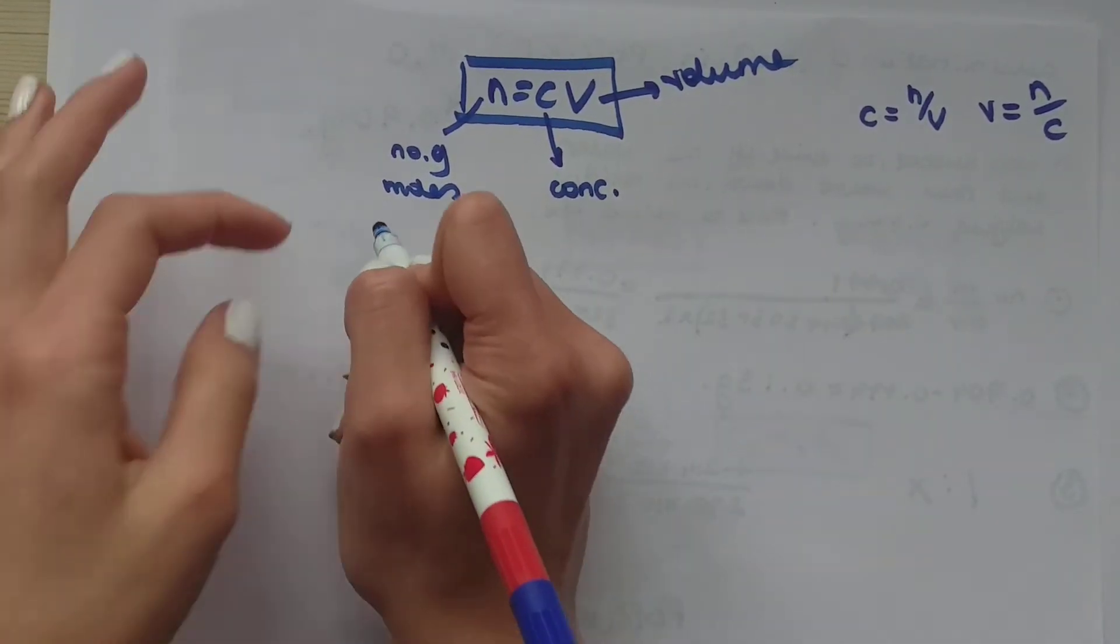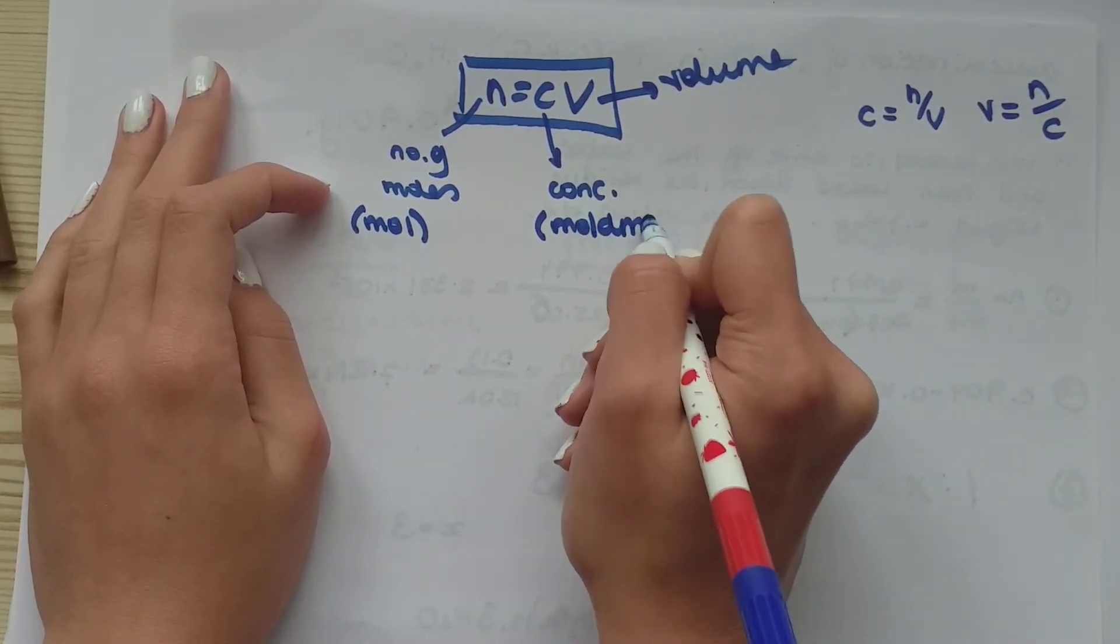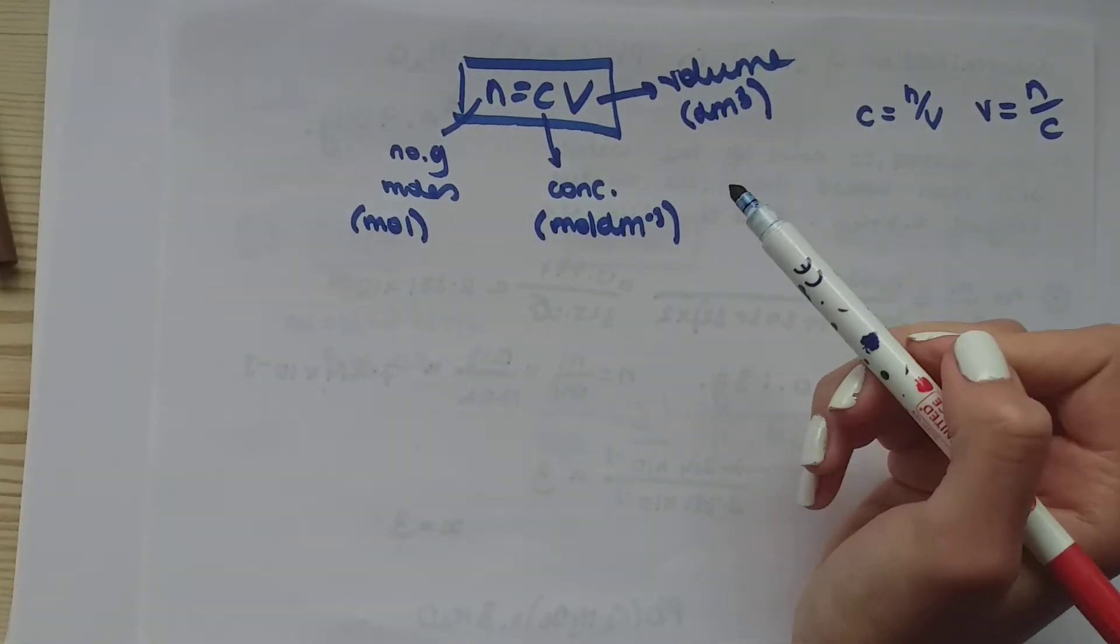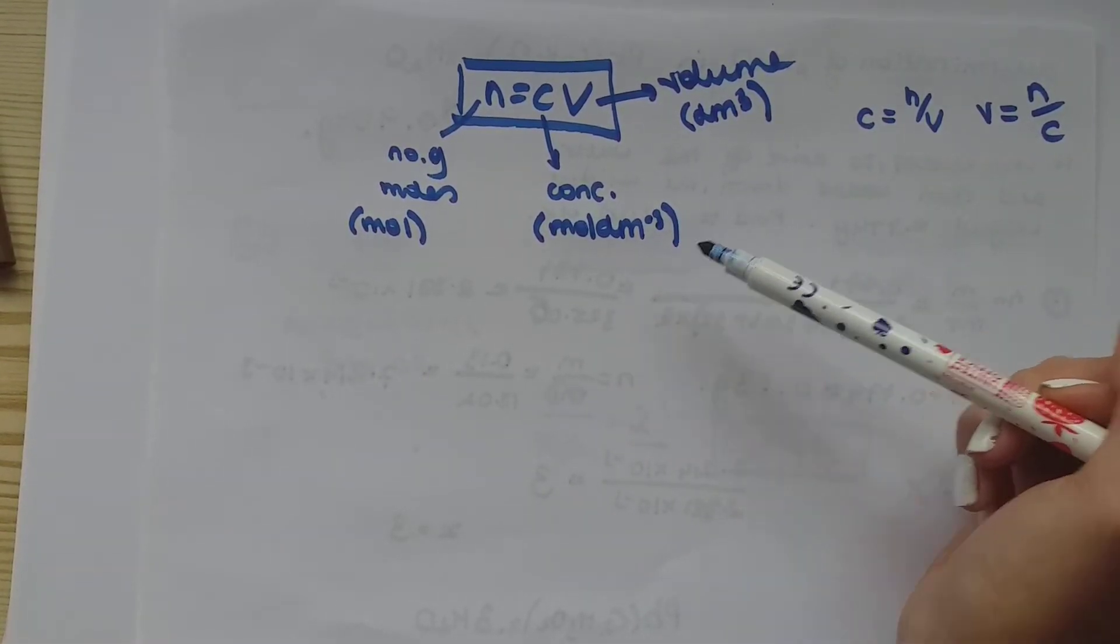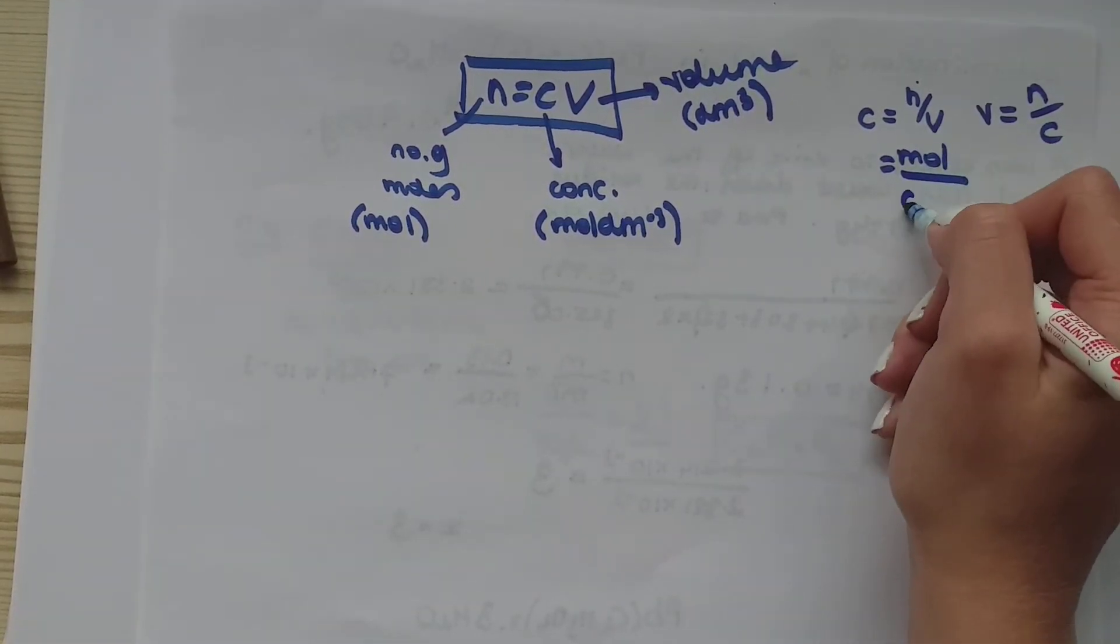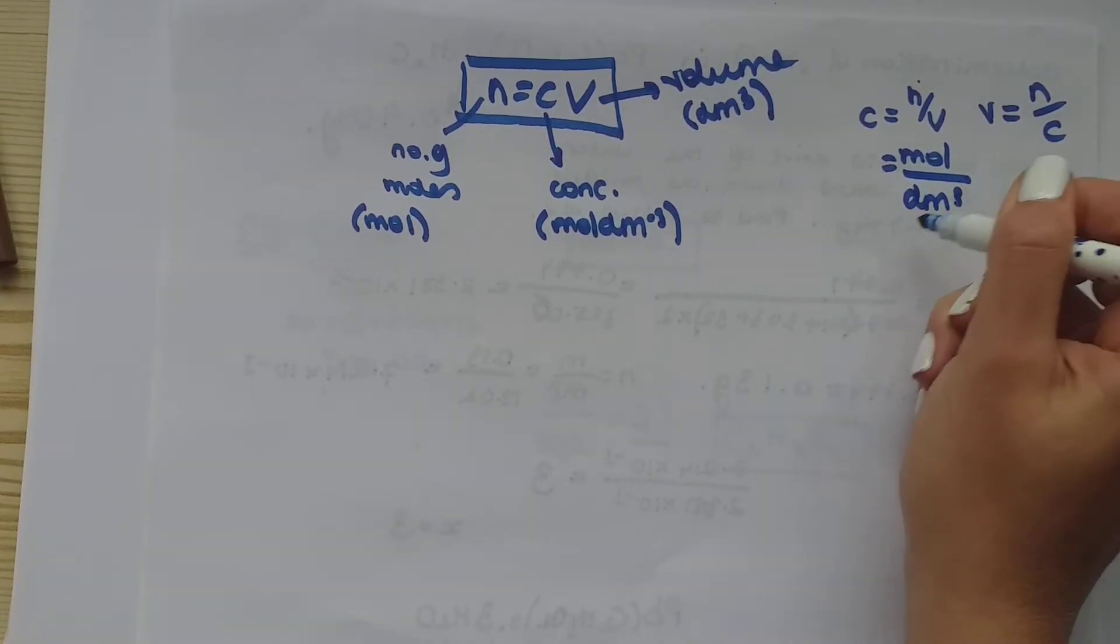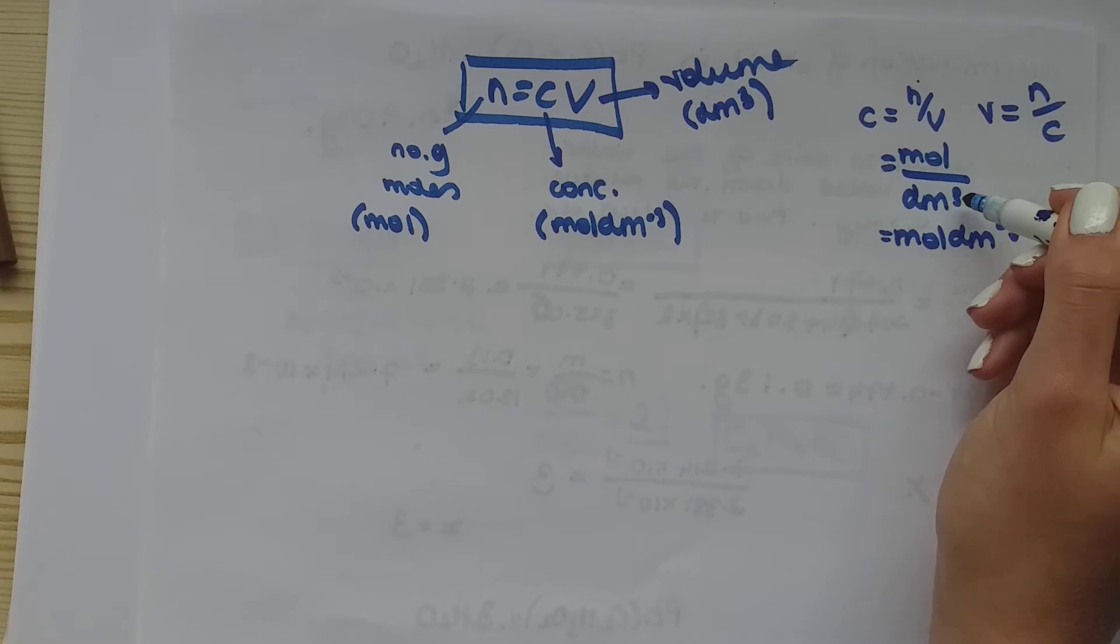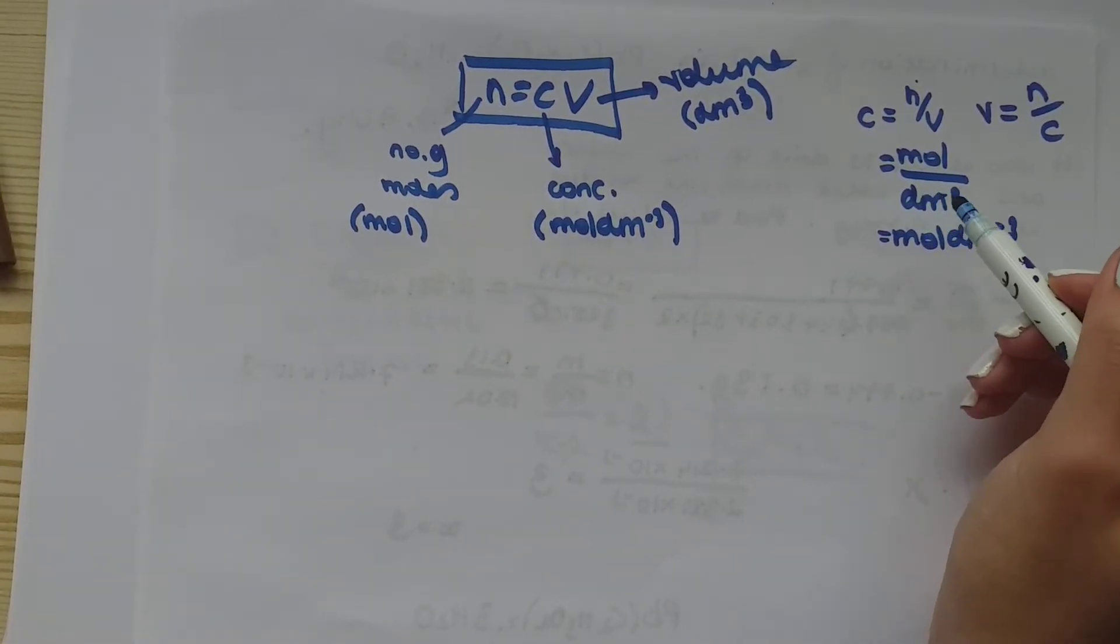So number of moles, the unit of moles is mole. Concentration will be mole dm minus three and volume is dm cubed. Why volume is calculated in dm cubed and why concentration is mole dm minus three? It's because if you're trying to find concentration, you do mole, you divide it by the volume. And if you divide by something and you want to take it up, you put a minus in front of this number, the indices that was here.